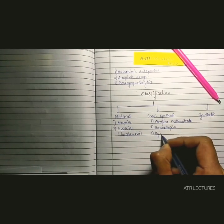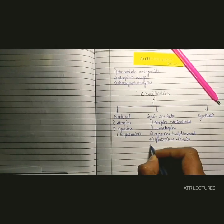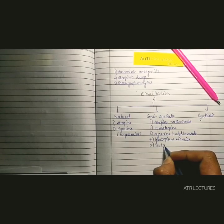Anticholinergic drugs are divided into three categories: natural, synthetic, and semisynthetic. Under natural, atropine and hyoscine come.